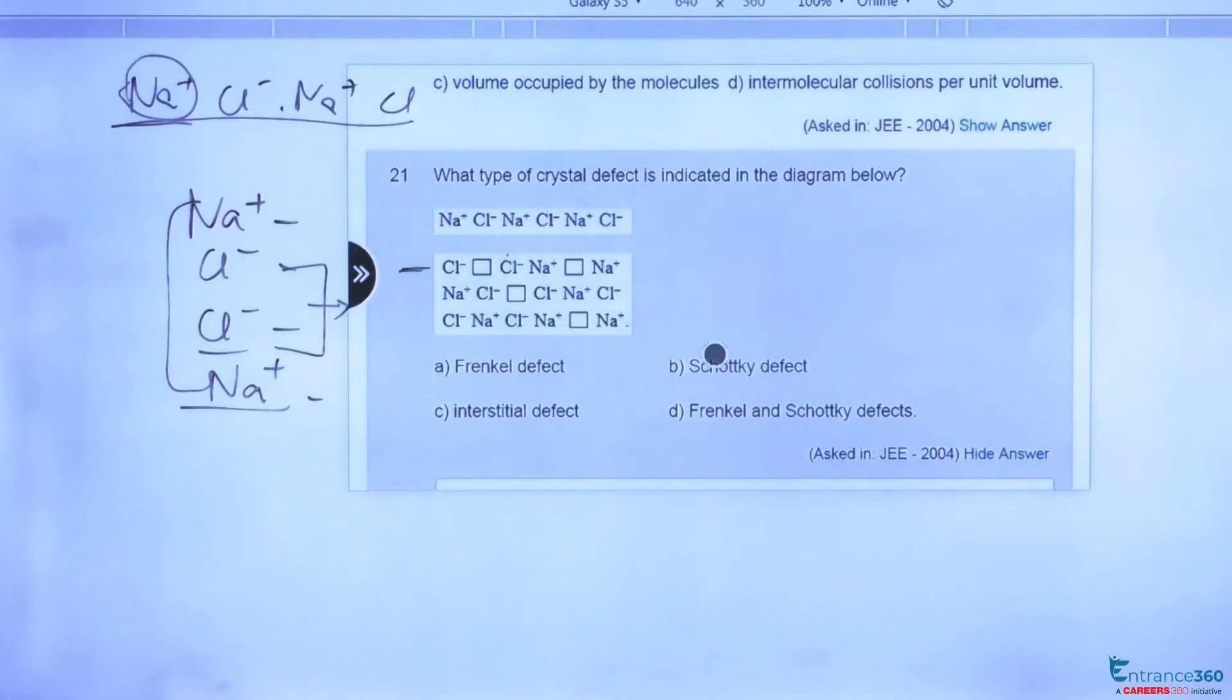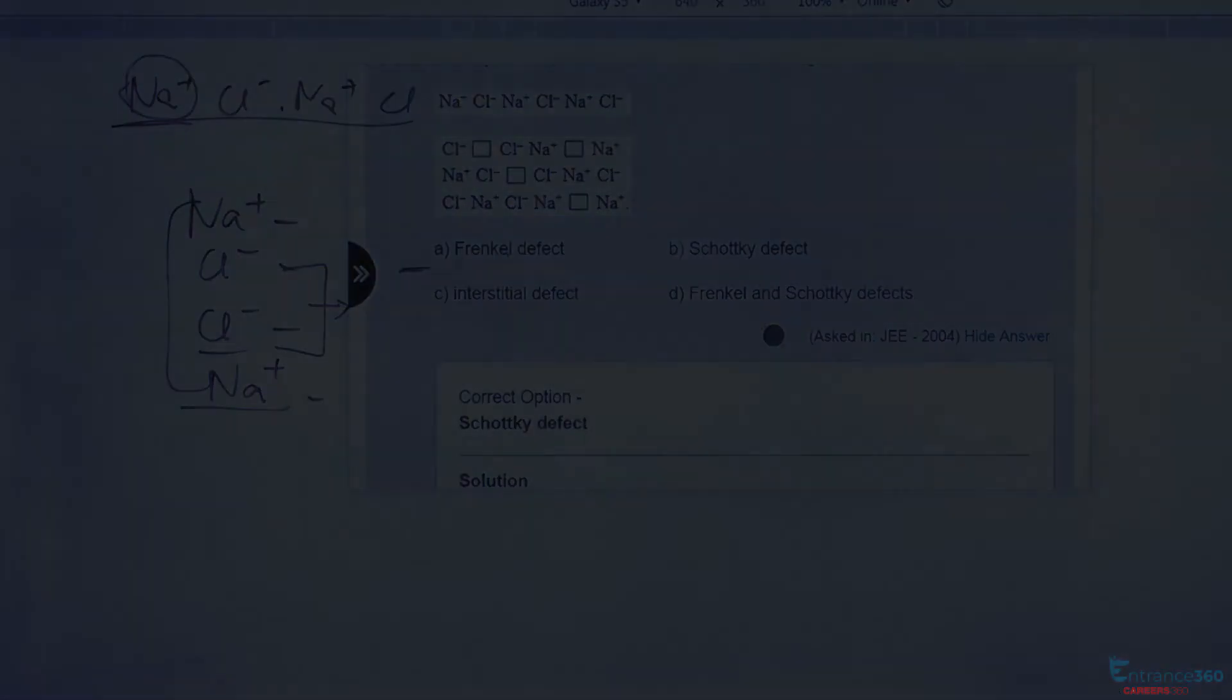From this we can infer that this is a Schottky defect in crystal structure. This Schottky, the scientist discovered very early. So we have got the correct option which is B, Schottky defect. Thank you students.